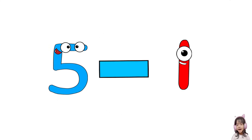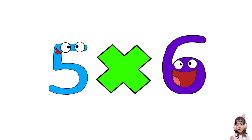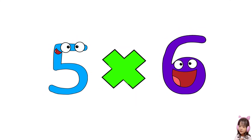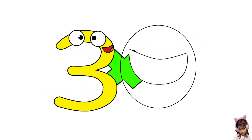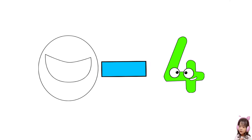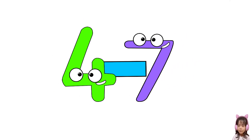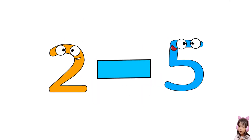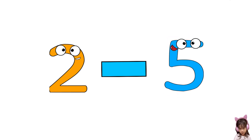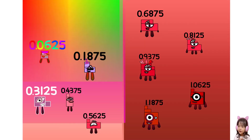Five minus one equals four. Five times six equals thirty. Zero minus four equals forty-seven. Two minus five equals forty-eight. Two.